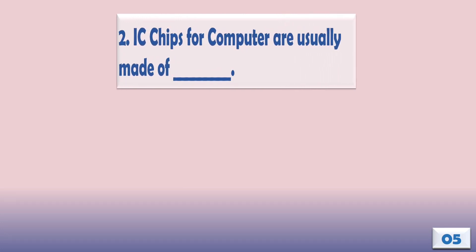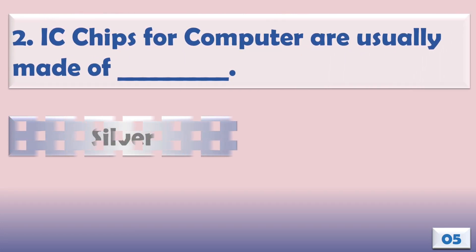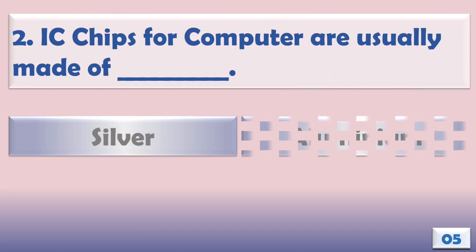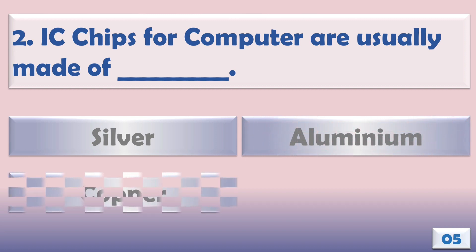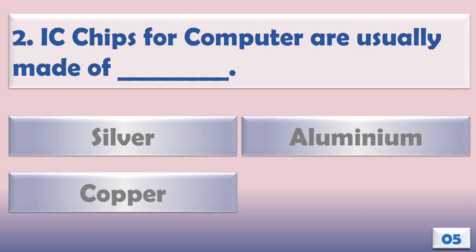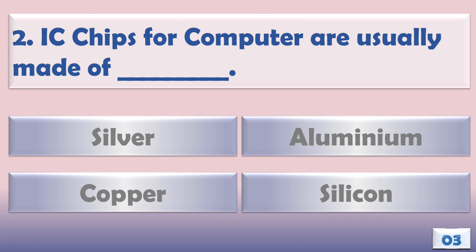IC chips for computers are usually made of what? The correct answer is silicon.